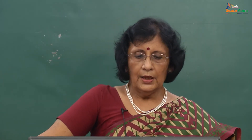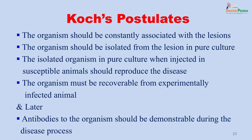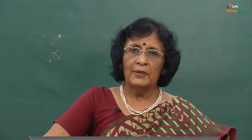The isolated organism in pure culture, when injected into susceptible animals, would reproduce the disease, and the organism must be recoverable from the experimentally infected animals. A fifth postulate has since been added: antibodies to the organism should be demonstrable during the disease process. Some organisms have not followed all of Koch's postulates — Mycobacterium leprae is one example where we have not managed to grow the organism, but antibodies to the leprosy bacillus have sometimes been demonstrated in the patient's blood.